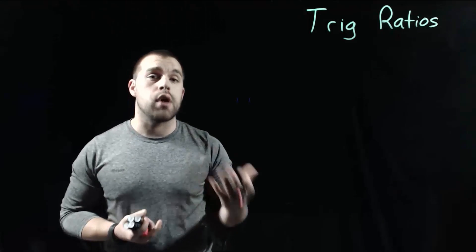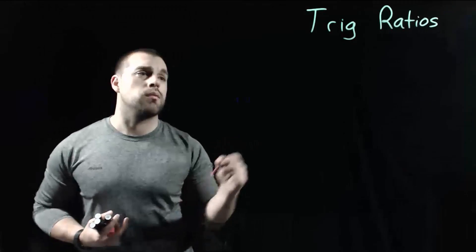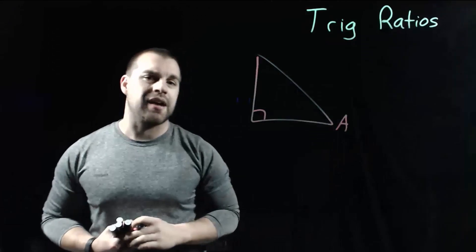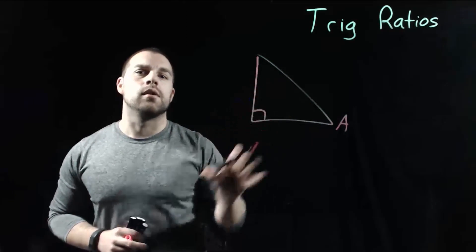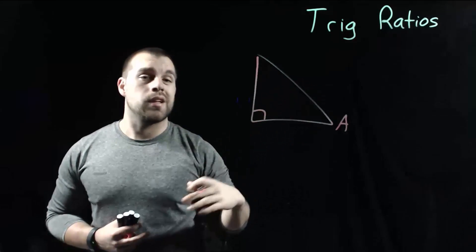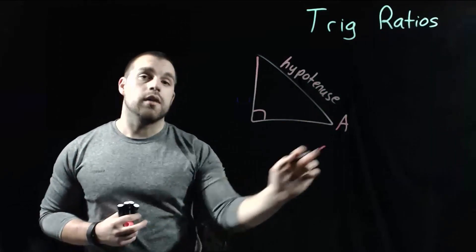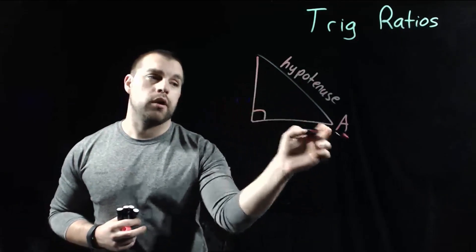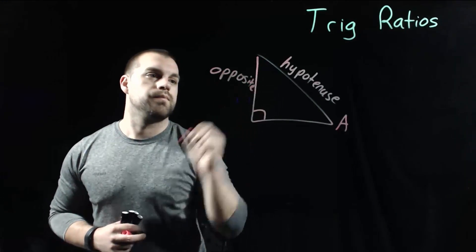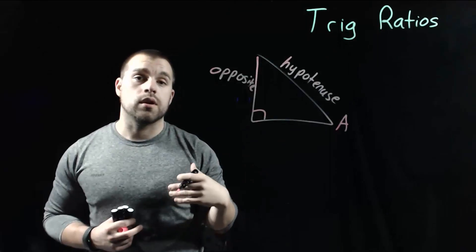A trig ratio is a fraction that's made out of different sides of a right triangle. So let's take a look at a right triangle. I'm going to call the angle down in the bottom right hand corner angle A. What we want to do is label some sides of this triangle based on where angle A is located. Across from the 90 degree angle is always going to be our hypotenuse. If we look all the way across from angle A on the opposite side, we call that the opposite side. And the side right next to angle A is going to be the adjacent side.